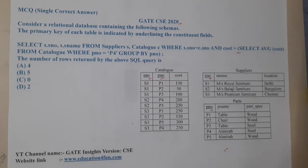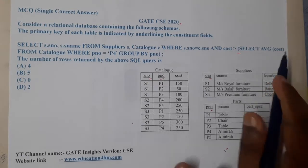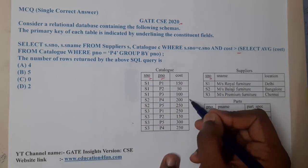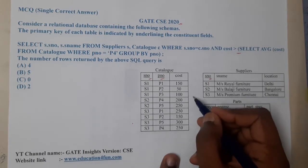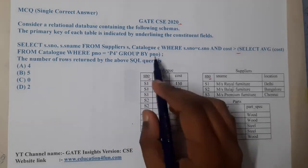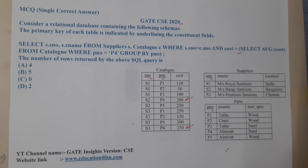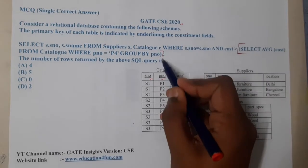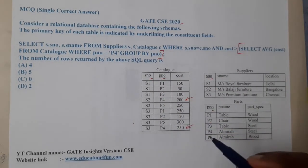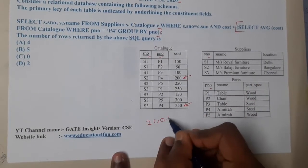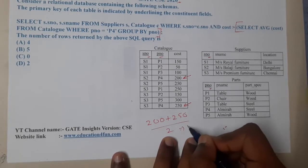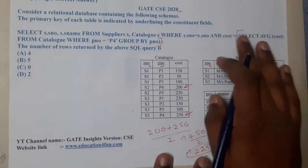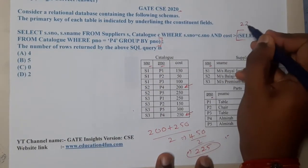To solve this, we focus on the inner query: SELECT AVG(cost) FROM catalog WHERE p_number = 'P4' GROUP BY p_number. We are targeting mainly P4. The average cost for P4 is (200 + 250) / 2 = 450 / 2 = 225. So after solving this inner part, we get 225 as the result.